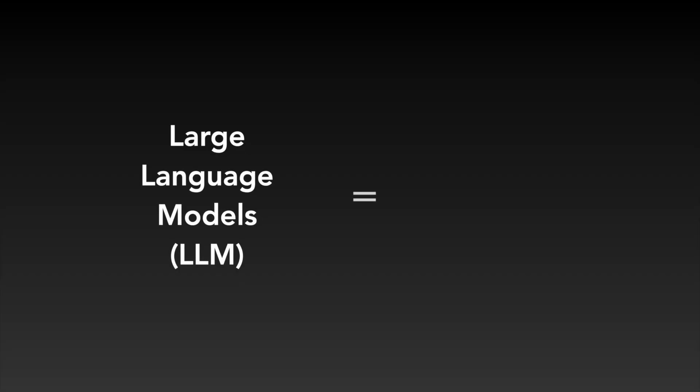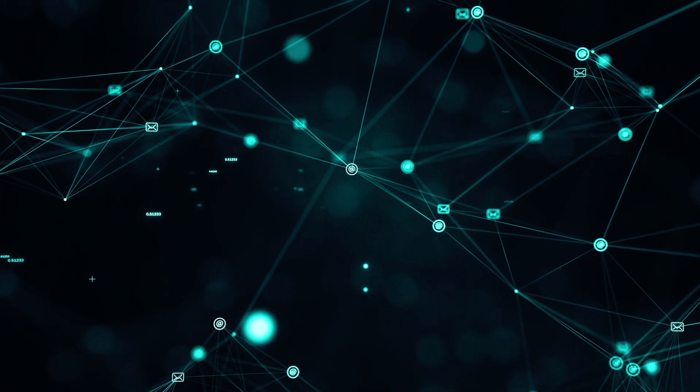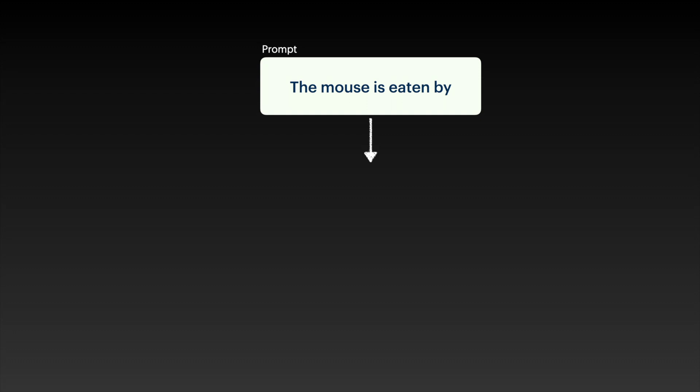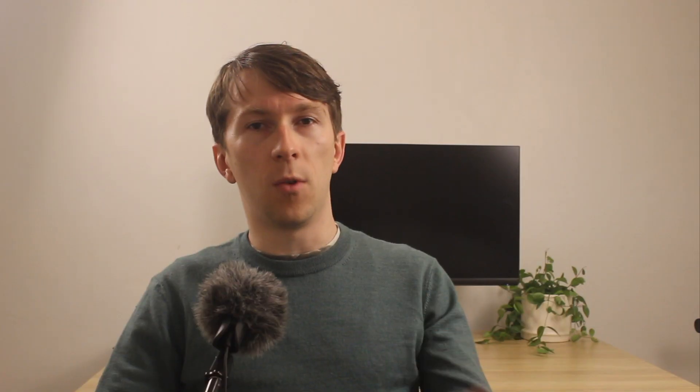Let's start with our first concept: LLM. Large language models are nothing else than a really smart, fancy, long-form autocomplete. When you send your request to an LLM like GPT, it will search for the most probable answer based on the billions of data that it was trained on and return it to you. Instead of giving you a single word, it gives you entire generated sentences. For example, I send the prompt 'the mouse is eaten by' into the LLM and it gives me back the highest probability answer.